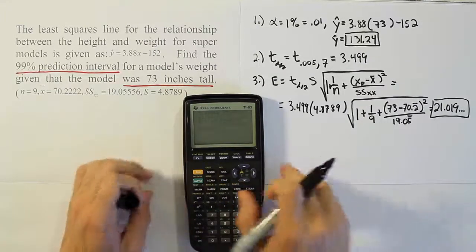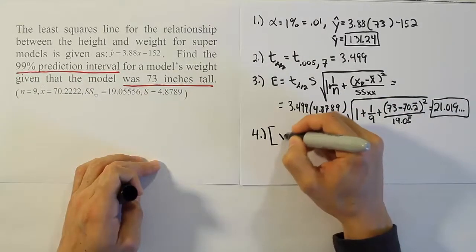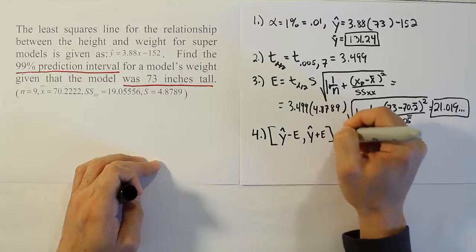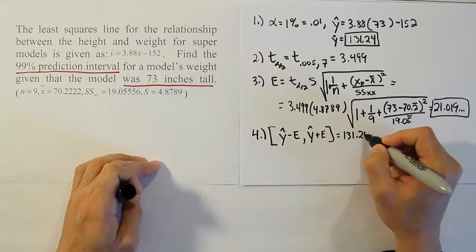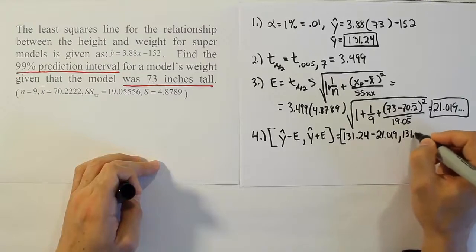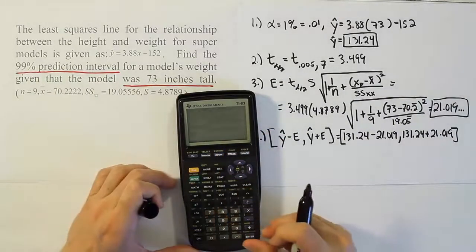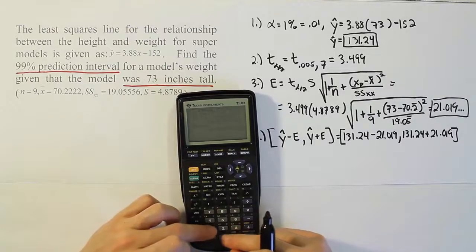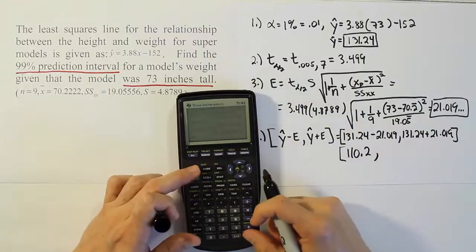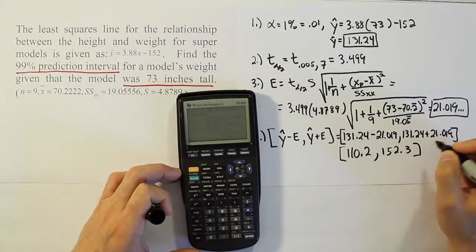Next part of the problem is just to take that error value and add and subtract it to y-hat. So y-hat minus the error, comma y-hat plus the error. Our y-hat value is 131.24. We'll subtract off the 21.019 and do the same thing but add it on the other side. I've stored this variable in my calculator, so I'm doing 131.24 minus x. I get 110.2. And we'll do the same thing but add x to it and we end up with 152.3. So that's our interval.